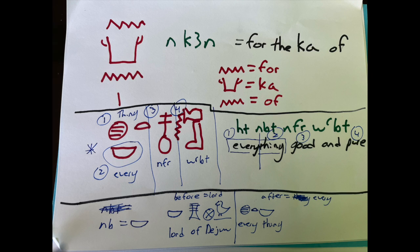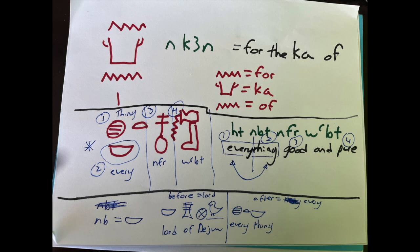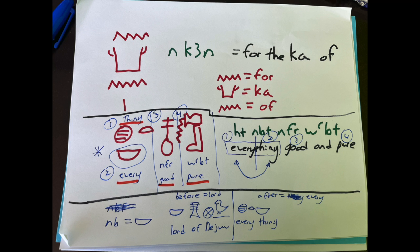Then next we have nefer, which is good, it's a three consonant sound. And then wabit, pure, another determinative glyph that is used for the full phrase. So everything good and pure as kind of one phrase.